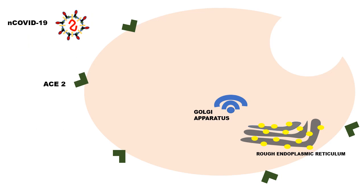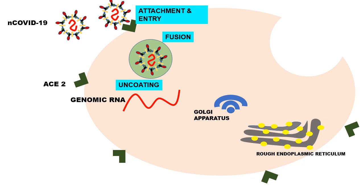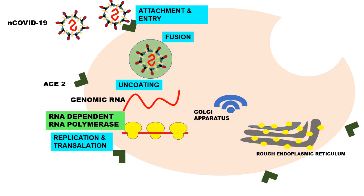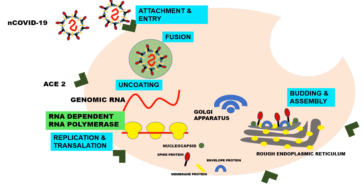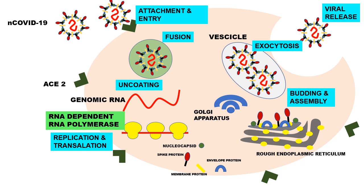Here we can see the cycle of COVID-19 inside the cell. The virus attaches to ACE2 receptors, enters the cell after fusion, and releases its genomic RNA into the cytoplasm. With the help of RNA-dependent RNA polymerase, replication and translation occur. It produces viral components like spike protein, membrane protein, and nucleocapsid envelope protein. These go to the rough endoplasmic reticulum where budding and assembly happen, and with the help of the Golgi apparatus, vesicles are released outside the cell. This is the normal cycle of the COVID-19 virus.